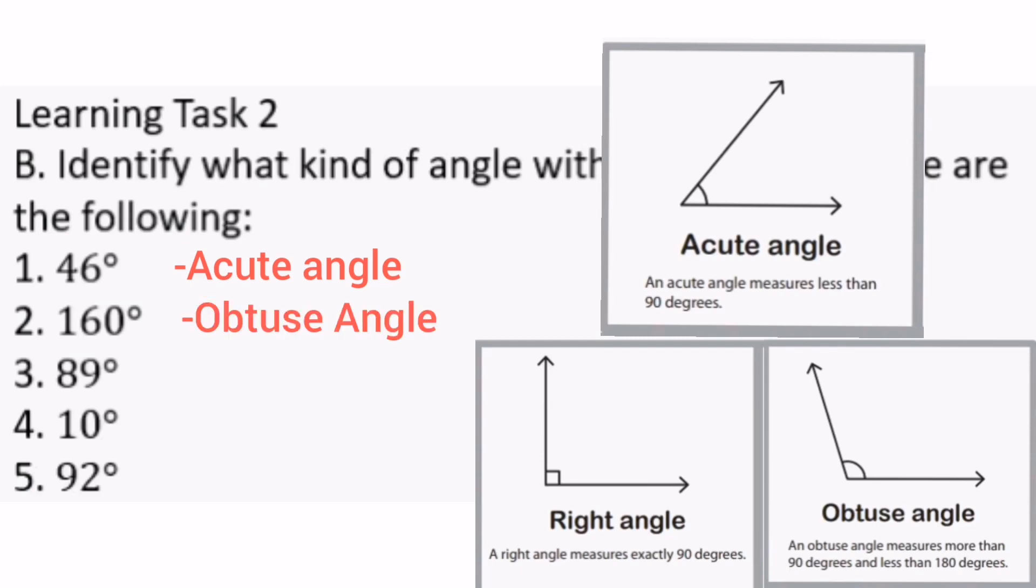Number 3, 89 degrees is less than 90 degrees, so it is an acute angle.